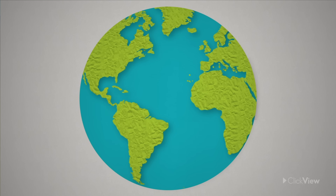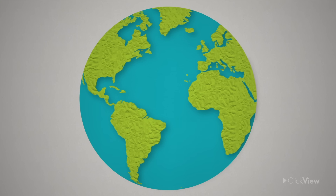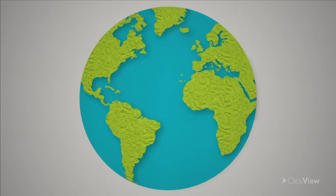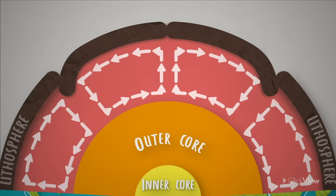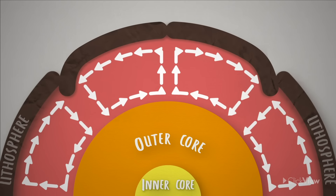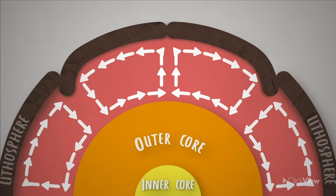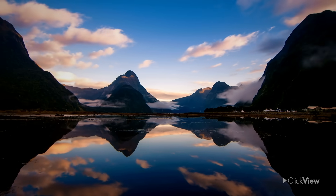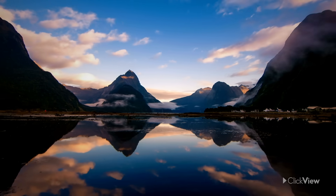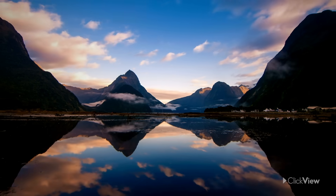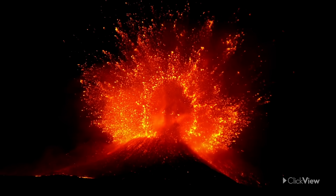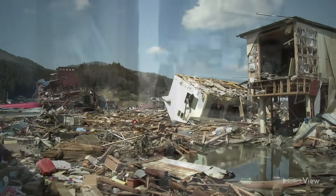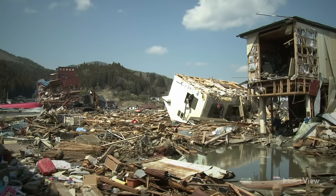Our earth is a dynamic and active planet, and its surface is composed of many individual plates that are always on the move due to the convection currents within. The plates are moving far too slowly for us to notice, yet they are responsible for the most devastating tectonic hazards like volcano eruptions, earthquakes, and tsunamis.